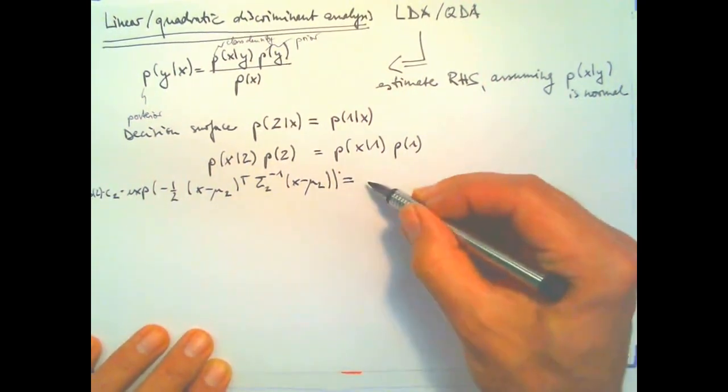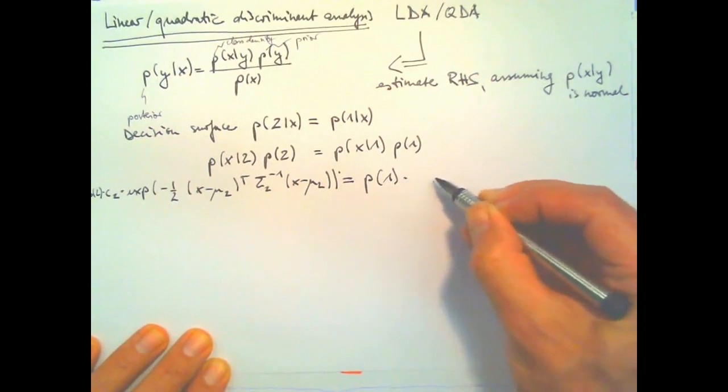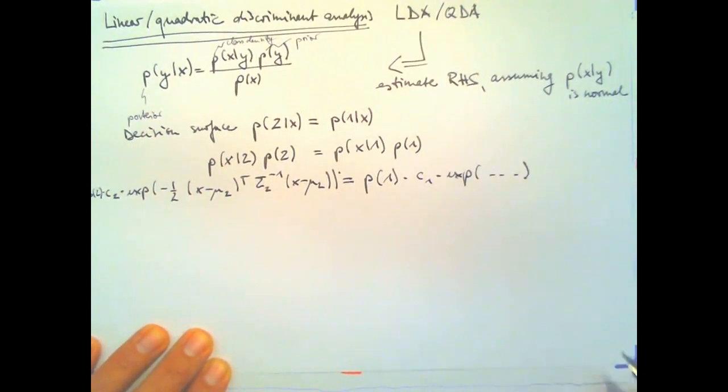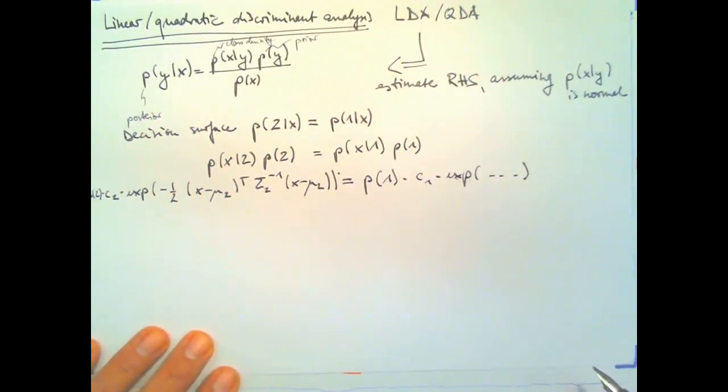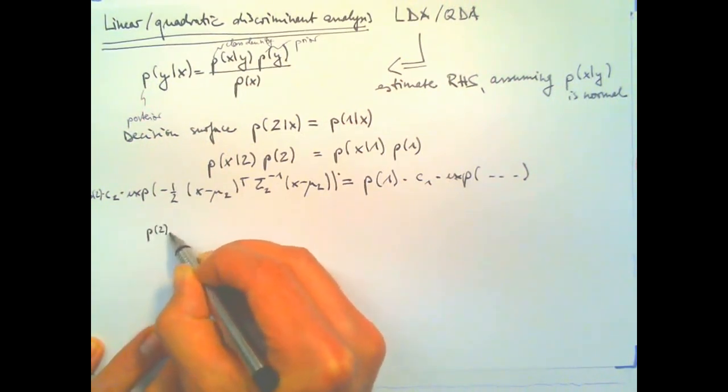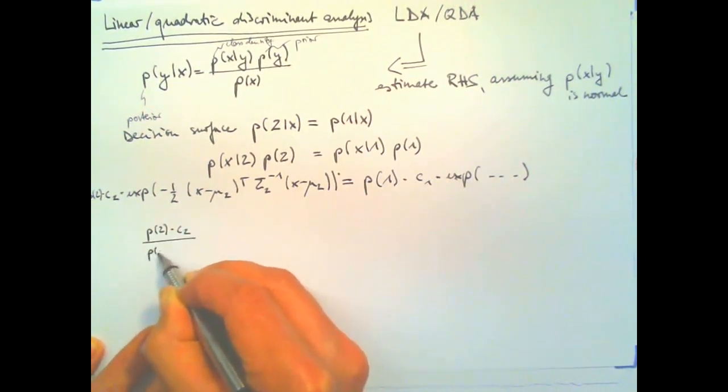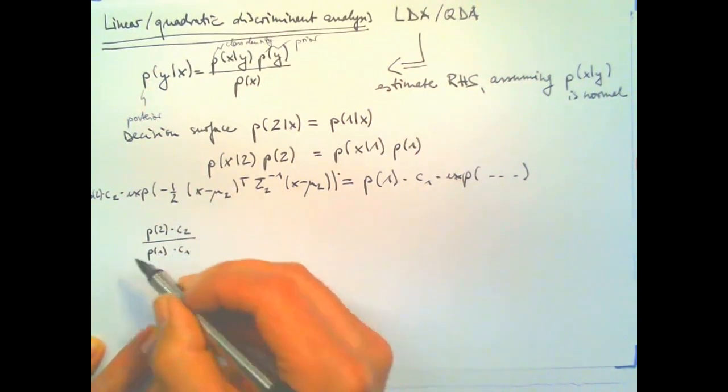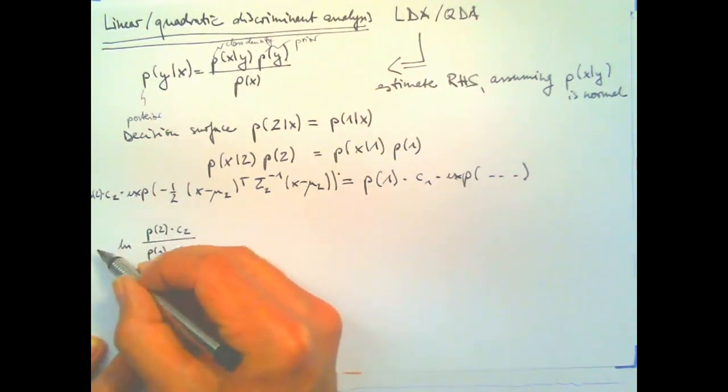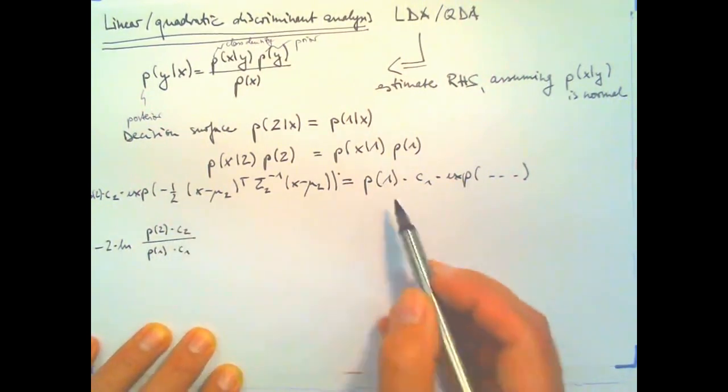And, I write something similar on the right-hand side. Probability of class one times the normalizing constant times e to the something. Okay, and if we now want to solve this for X, I can bring all these constants on one side by writing P of two times C of two divided by P of one times C of one. And, I'm taking a logarithm of this entire expression and I'm multiplying with minus two to get rid of these minus one halves.